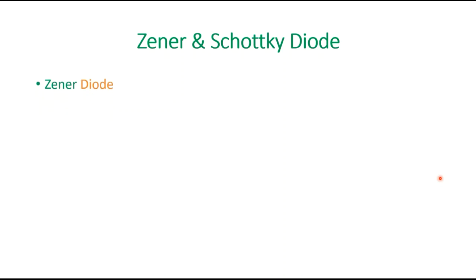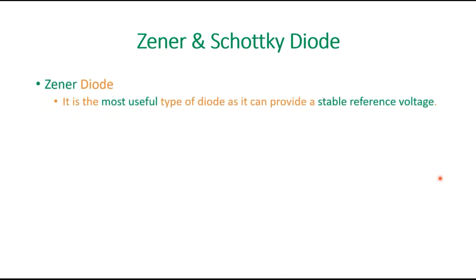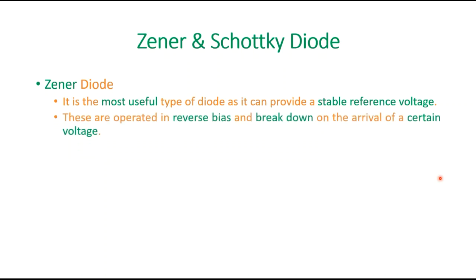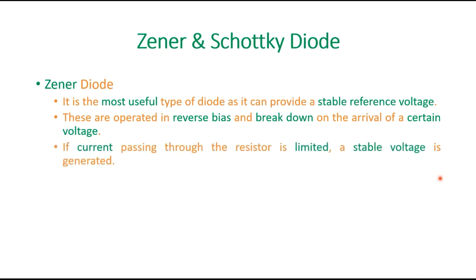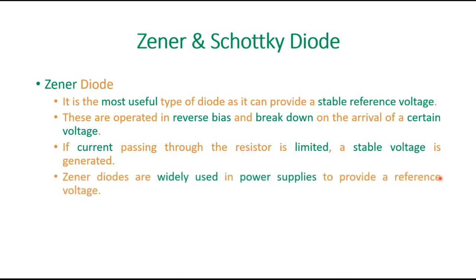Coming to Zener diode: this is the most useful type of diode as it can provide a stable reference voltage. These are operated in reverse bias and break down upon the arrival of a certain voltage. If the current passing through the resistor is limited, a stable voltage is generated. Zener diodes are widely used in power supplies to provide a reference voltage.